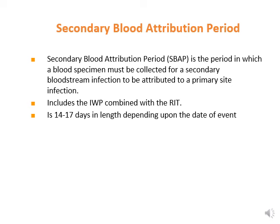The secondary blood attribution period is the period in which a blood specimen must be collected for a secondary bloodstream infection to be attributed to a primary site infection. This includes the infection window period combined with the repeat infection time frame, usually ranging from 14 to 17 days in length, depending upon the date of event.